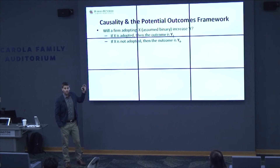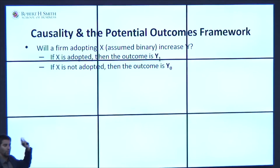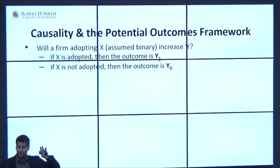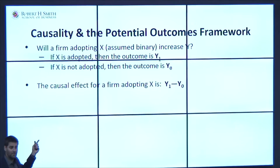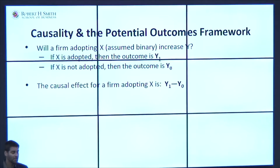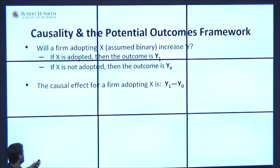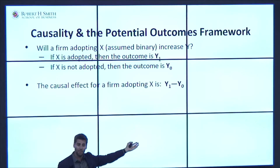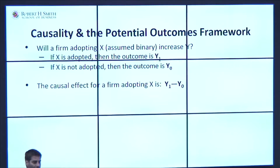You can think about a world where X is adopted — the firm does it — and you track forward in time and observe their outcome, Y1. Y1 is the outcome when the firm adopts X. If the firm does not adopt X, then the outcome is Y0. We have two states of the world. The causal effect is the difference in the potential outcomes between these two worlds — the one where the firm did the M&A and the one where it didn't. The problem is we only observe one world. That's the fundamental problem.